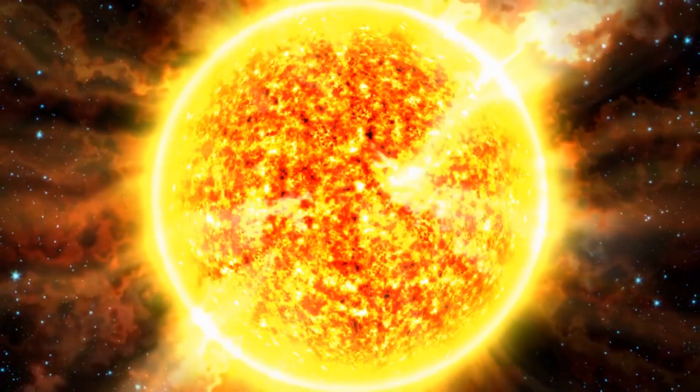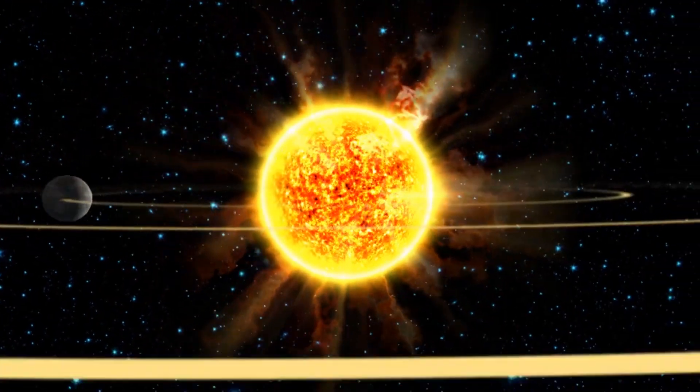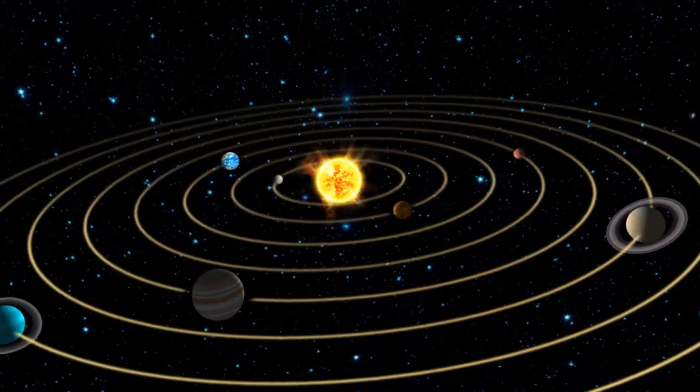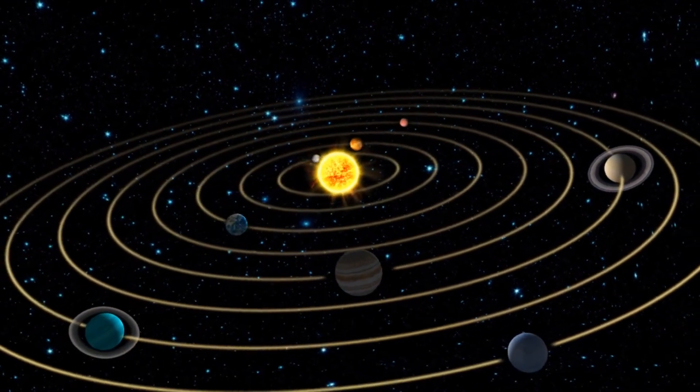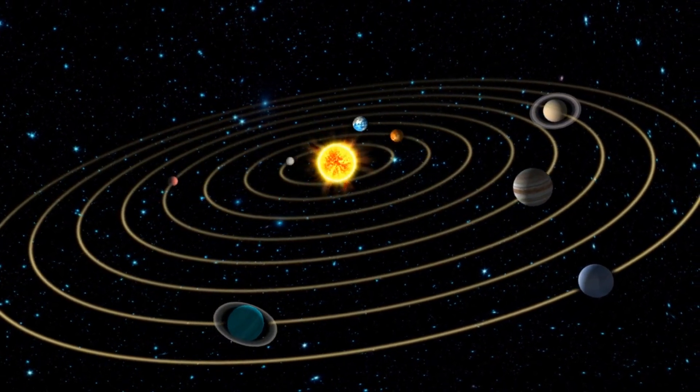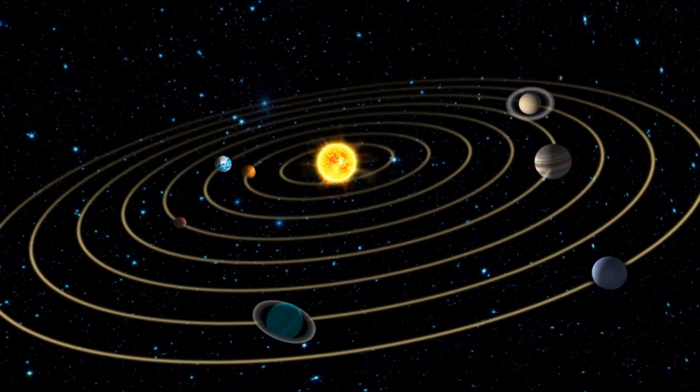Looking ahead, solar wind parameters are expected to continue trending toward nominal levels until the 3rd of July. On the 4th of July, weak negative polarity coronal hole high-speed stream effects are anticipated, potentially leading to quiet to unsettled geomagnetic conditions.